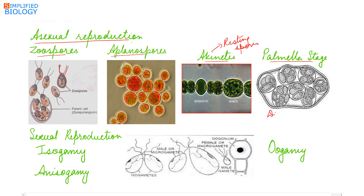Under dry conditions, the palmella stage is seen. The cell wall of the parent cell gelatinizes along with the cell wall of the daughter cells, causing daughter cells to lie in a mass of gelatin. As favorable conditions return, the gelatin dissolves in water and the daughter cells develop flagella and swim out of the mass of gelatin.